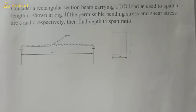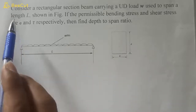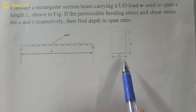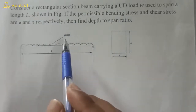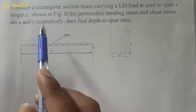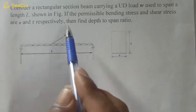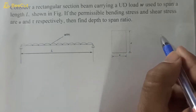Welcome to my YouTube channel Mac PM. In today's video we will solve a problem based on bending stresses and shear stresses in beams. Consider a rectangular section beam with width b and depth d, carrying a uniformly distributed load of intensity w per meter and span length l. If the permissible bending stress and shear stress are sigma and tau respectively, then find the depth to span ratio, d by l.